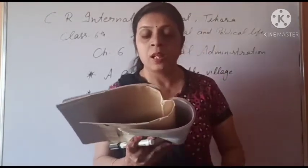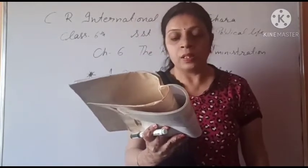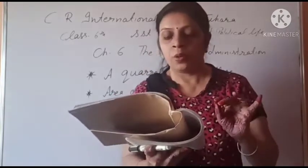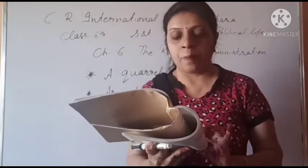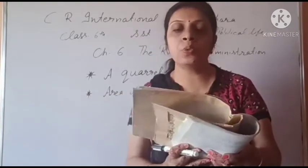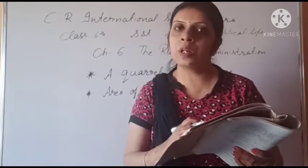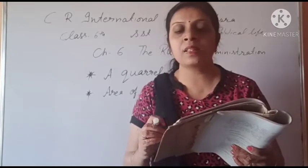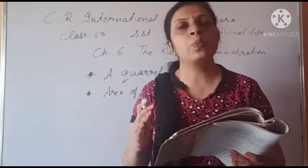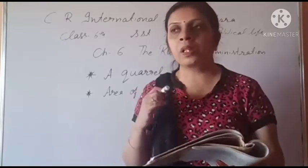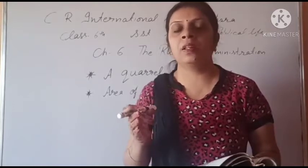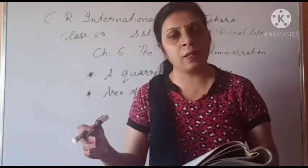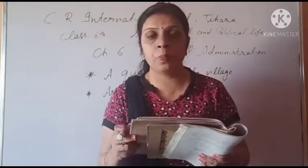One morning Mohan noticed — ek subah Mohan ne notice kiya — that Raghu had shifted the bund by a few feet. Raghu ne apni zameen kuch feet aage shift kar li thi. By doing so, he had managed to take over some of Mohan's land and increase the size of his own field. Raghu ne raat ke samay jo khet ki med thi usse Mohan ke khet ki taraf badha diya, jis se Mohan ka khet chota ho gaya aur Raghu ka khet bada ho gaya.